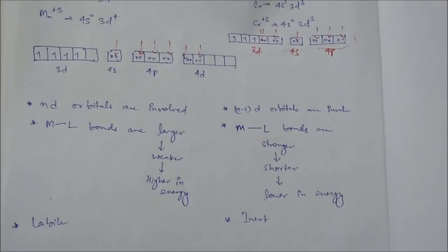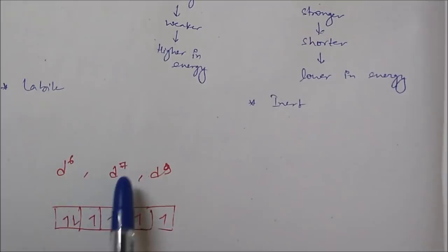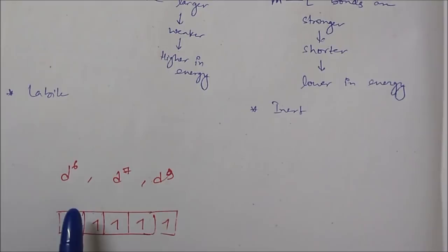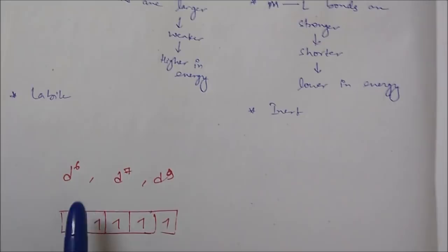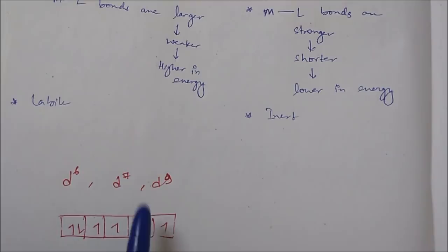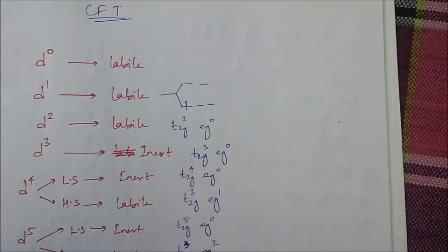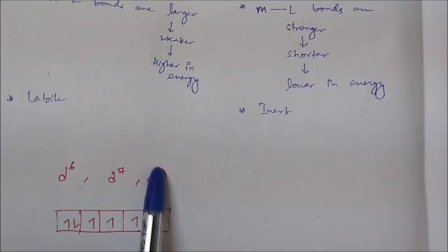The exceptions observed were with d⁶, d⁷, and d⁹ configurations. According to VBT, they should all be inert because they don't have vacant low-energy d orbitals, but experimentally they were found to be labile. These exceptions were overcome when Crystal Field Theory (CFT) was used to explain inert and labile behavior.